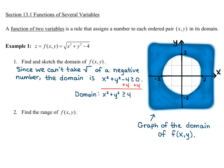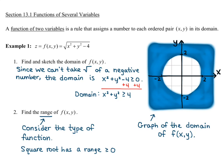For part 2, to find the range of f(x, y), consider the type of function you're dealing with. We're dealing with a square root in this case, and we know that the output of a square root is always greater than or equal to 0. So our function has a range of z greater than or equal to 0. For the domain, you're looking at what the input can be, and for the range, you're looking at what the output can be. You'll want to review your different types of functions from pre-calculus and think about their domains and ranges.